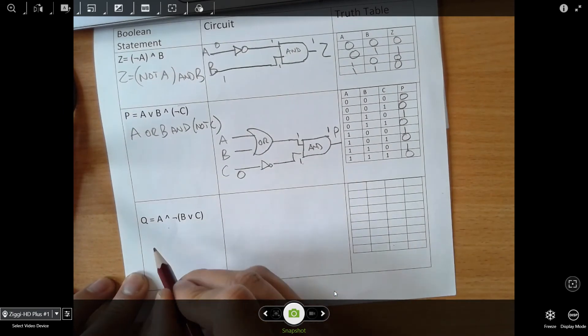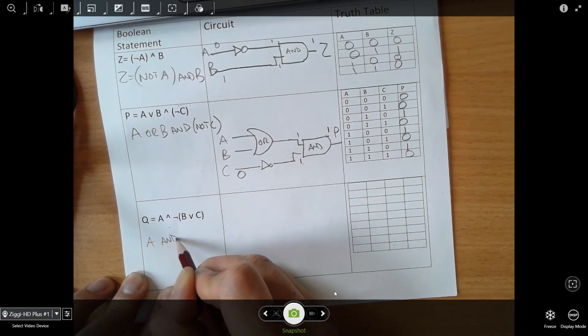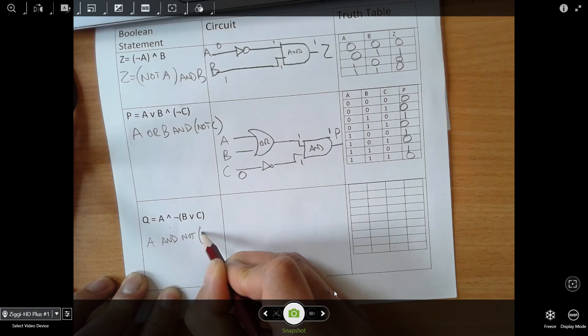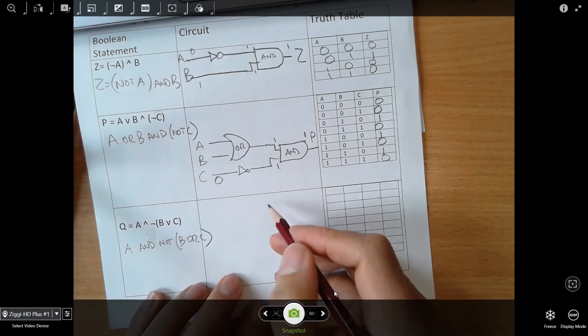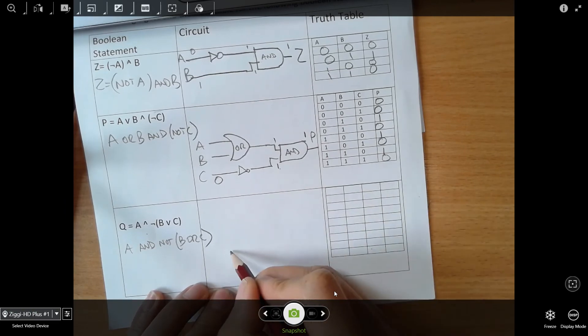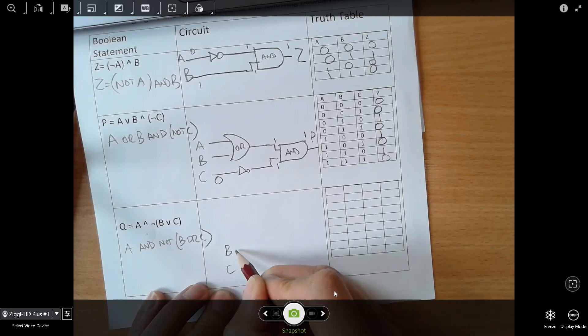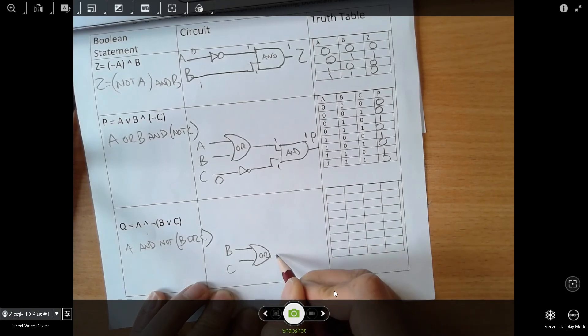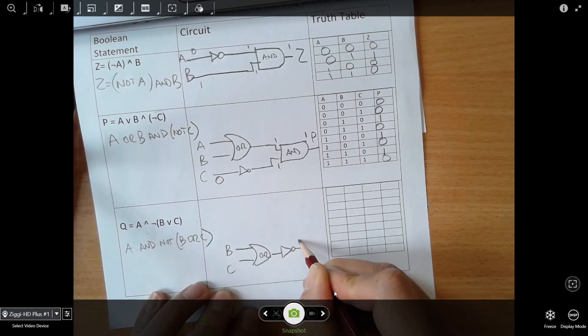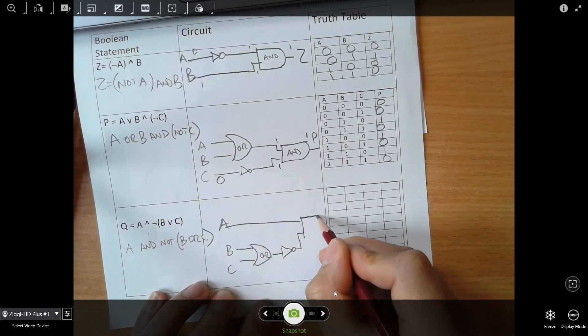Next one, you might want to pause first. We'll go A AND NOT B OR C. What's happening here is A goes straight into the NOT of B or C, so let's do B or C first. B and C go into an OR gate and that is NOTted and that goes into the AND gate with A.